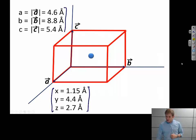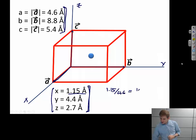So to get the fractional coordinates, I need to divide these lengths by the lengths of the original vectors. So in the X direction, it's 1.15 angstroms. And we know the lattice vector A is aligned in the X direction. And it has a length of 4.6. So 1.15 over 4.6 equals 1 quarter.